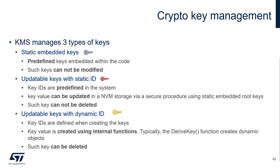In the KMS, we have three main categories of keys. Static embedded keys are predefined and embedded in the code — they can't be updated. Then we have updatable keys with static ID: the ID is predefined in the system, but the key value is updatable afterward in a secure way, meaning integrity, authenticity, and confidentiality of the key value is guaranteed using some static embedded root key.